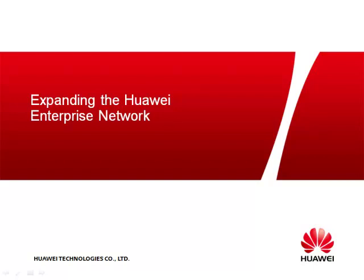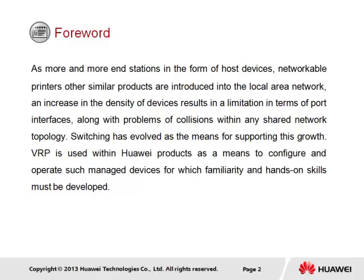This section looks at expanding the Huawei Enterprise Network through the introduction of routing and switching products. As more and more end stations in the form of host devices, networkable printers and other similar products are introduced into the local area network, an increase in device density results in limitations in port interfaces, along with problems of collisions within any shared network topology. Switching has evolved as the means for supporting this growth. VRP is used within Huawei products as a means to configure and operate such managed devices, for which familiarity and hands-on skills must be developed.